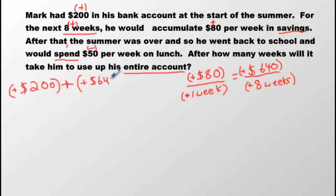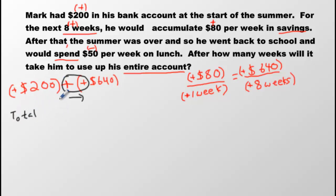That's $640. Quick recall: when you have an addition or subtraction question, you want to circle the two signs and look to see if they are the same. If they are, we move to the right. This is just adding $640 to $200, so we know the total is going to be $840. This is a positive amount. Your goal is to write symbols beside every number, so we'll put a plus sign there. He has that much at the end of the summer.